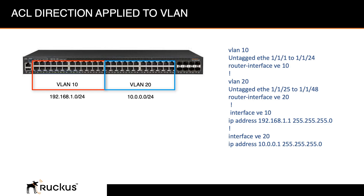In this setup, we built two VLANs on a 7150. We've taken the first 24 ports and put them in VLAN 10 in the 192.168.1.0 subnet. VLAN 20 is ports 25 to 48 in the 10.x.x.x/24 subnet. Basically, we just split the switch in half for illustration purposes, and then we'll apply the ACLs on the VLAN.